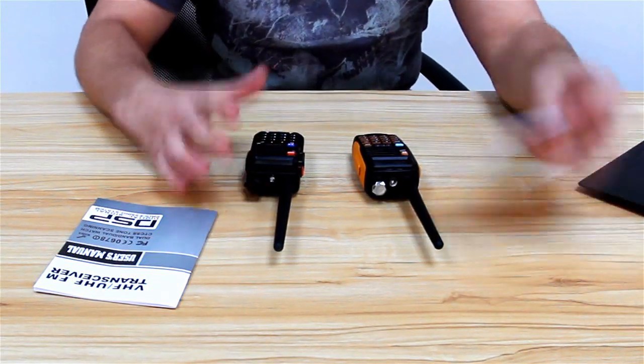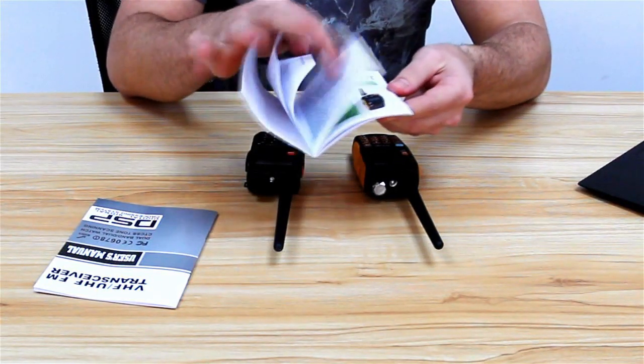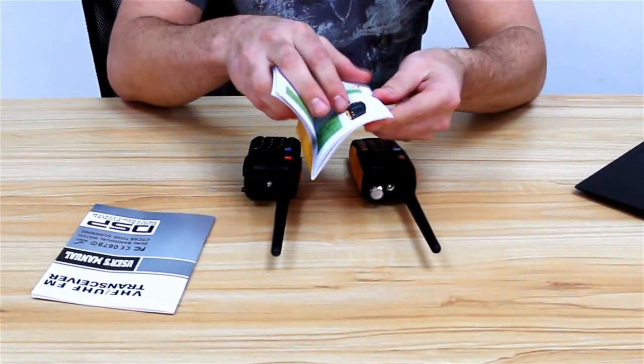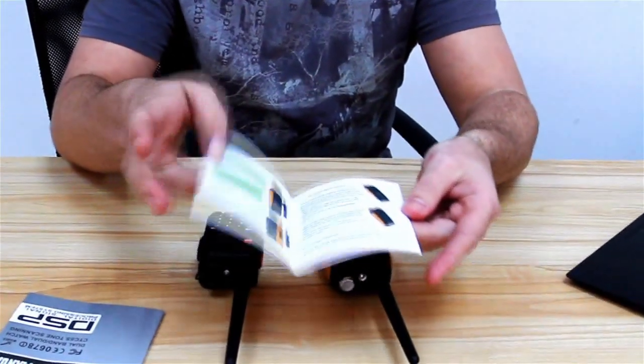We'll start out with the manuals. As we can see, this is the GT3. Obviously we have color, a lot more pictures in here to kind of follow along with. Easily go through the process, assembly process, and whatnot.